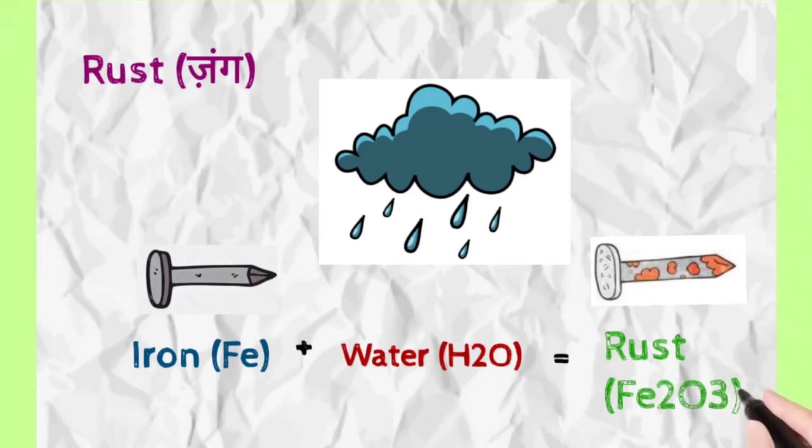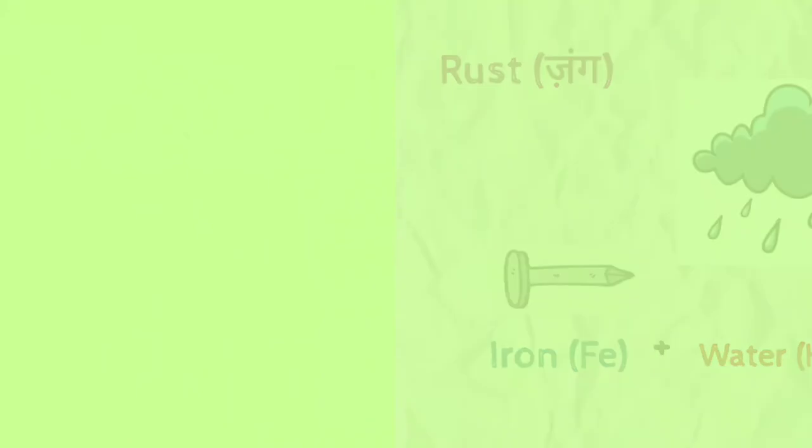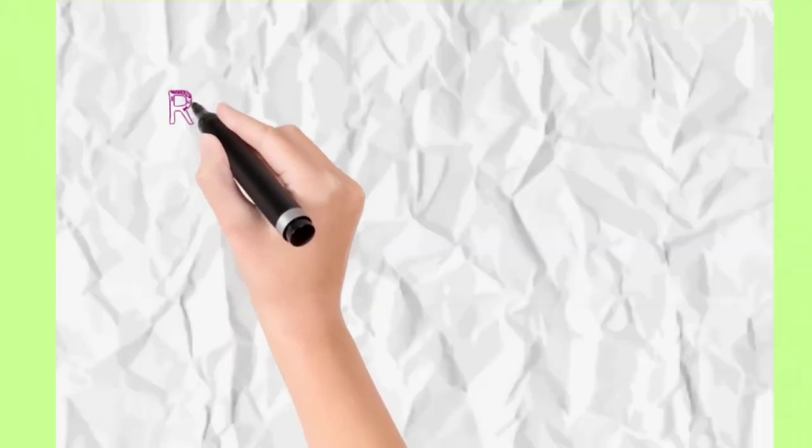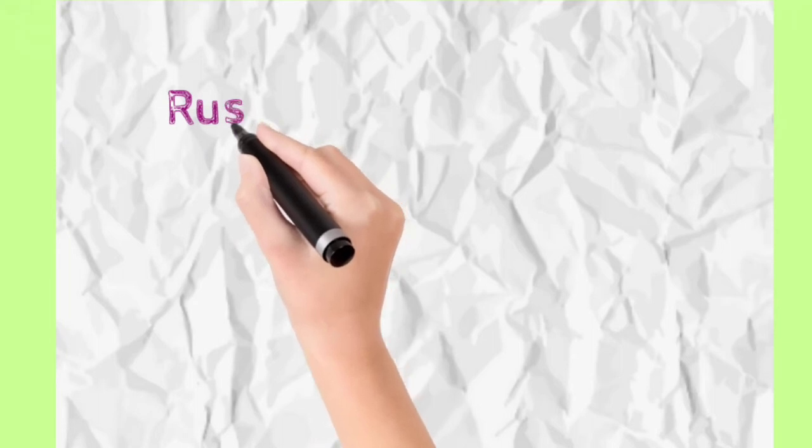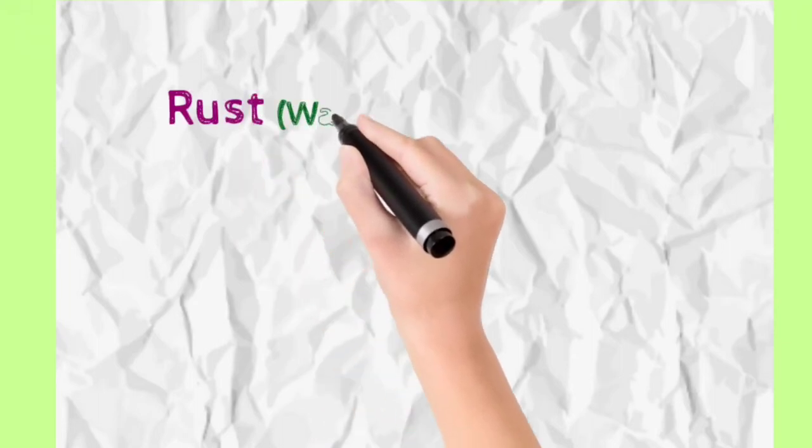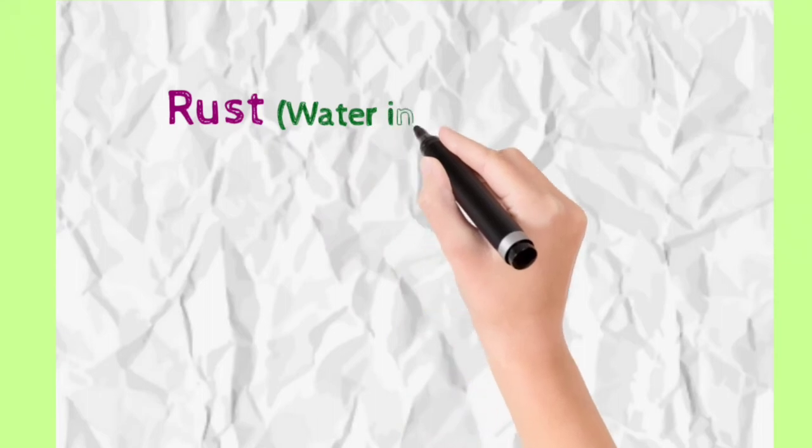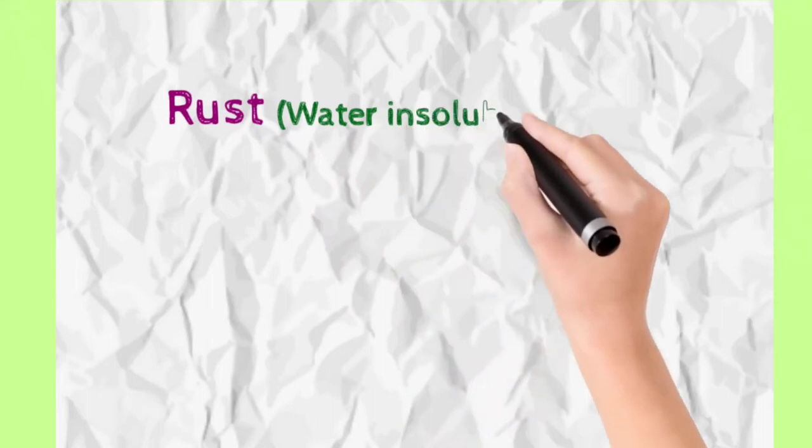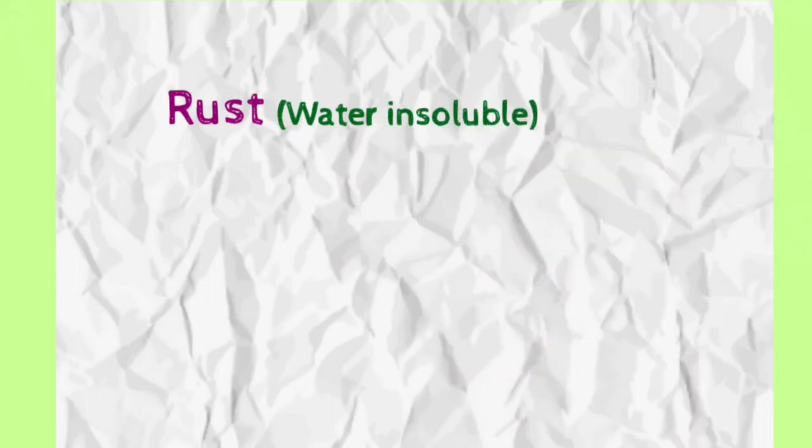What is the chemical nature of rust? Rust is water insoluble. If we put rust in water, it will not dissolve or wash away, because rust is water insoluble.